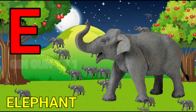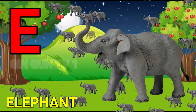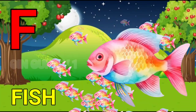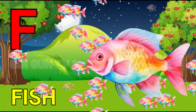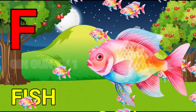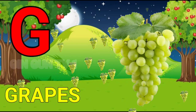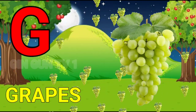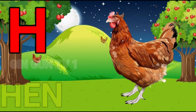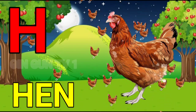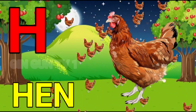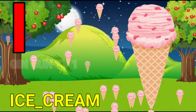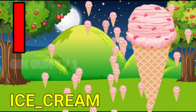E for elephant, elephant means hathi. F for peas, peas means musli. D for grapes, grapes means anggur. H for hen, hen means murgi. I for ice cream, ice cream means ice cream.